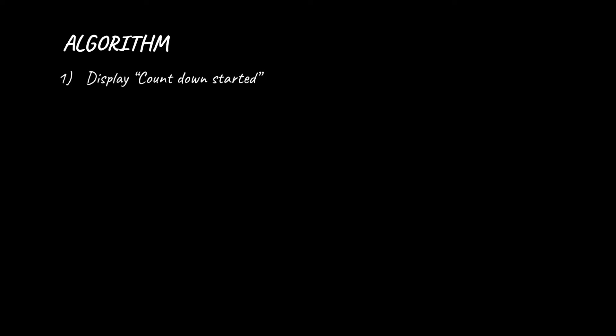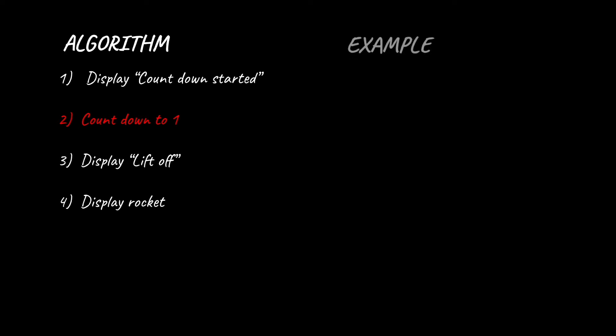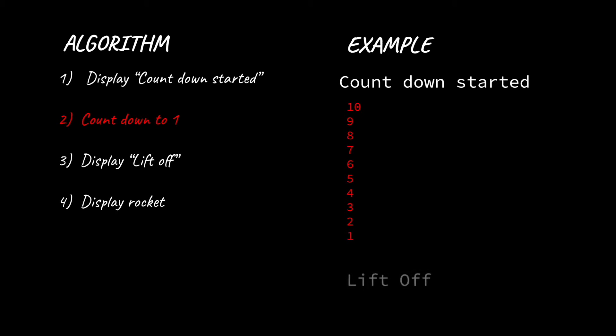Instead of jumping straight into coding, let's go to the board and make sure we understand exactly how the program is going to work. First we're going to display a message to let the user know that the countdown has started. Then we're going to start the countdown. Third, we're going to display the liftoff message and then show the rocket flying up. First we'll see the countdown started message, then the sequence of seconds, and finally the liftoff message. For now let's leave the rocket out.